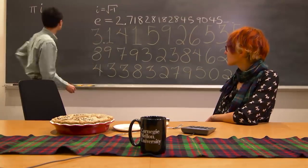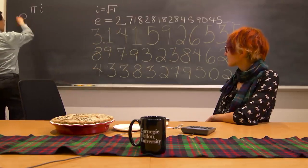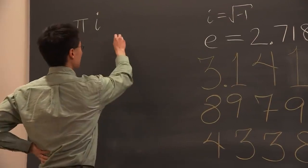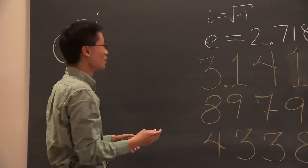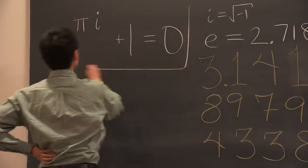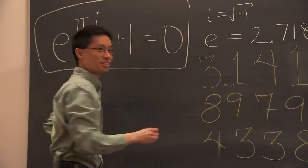Anyway, three crazy numbers. It turns out that if you take e and raise it to that, then I can finish the equation with two more numbers. Like the most basic numbers in math are 1 and 0. And this is true.